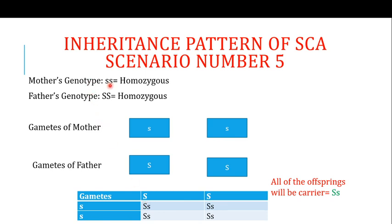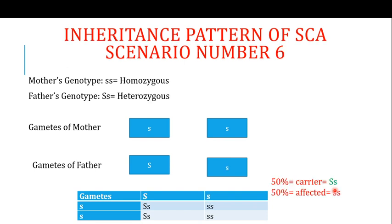The fifth scenario is when the mother is homozygous diseased (ss — a patient of sickle cell anemia) and the father is homozygous normal (SS). All gametes from the mother carry the diseased allele, and all gametes from the father carry the normal allele. All offspring will therefore be carriers (Ss) and will not show any symptoms of sickle cell anemia.